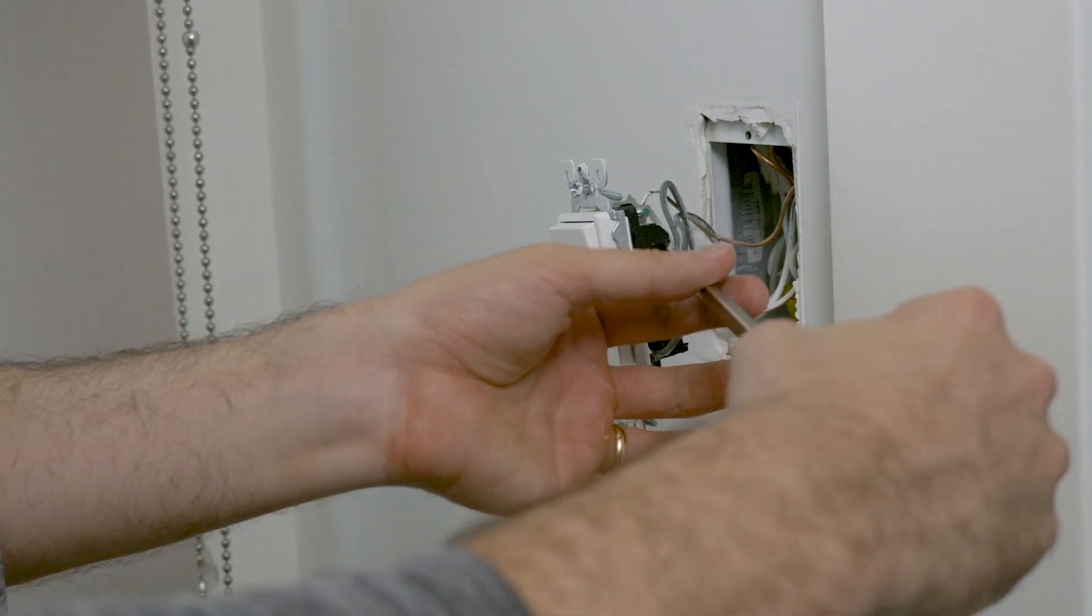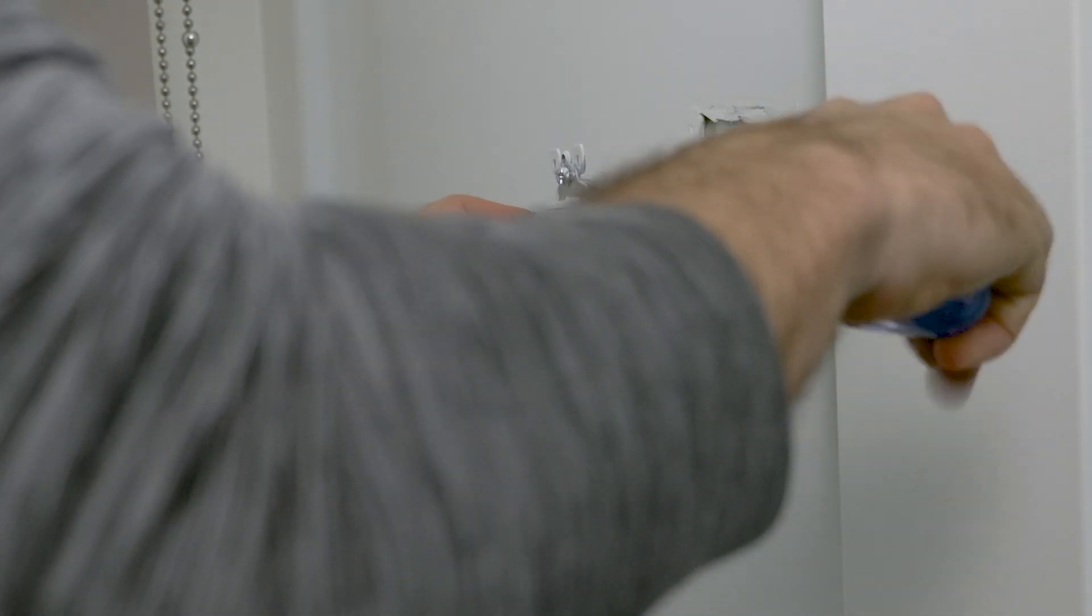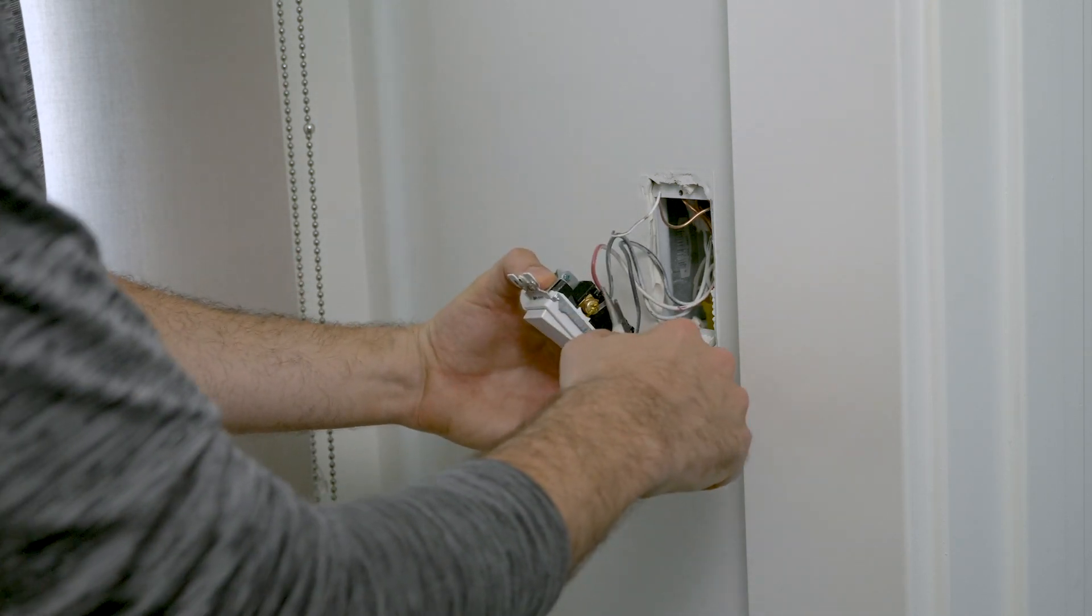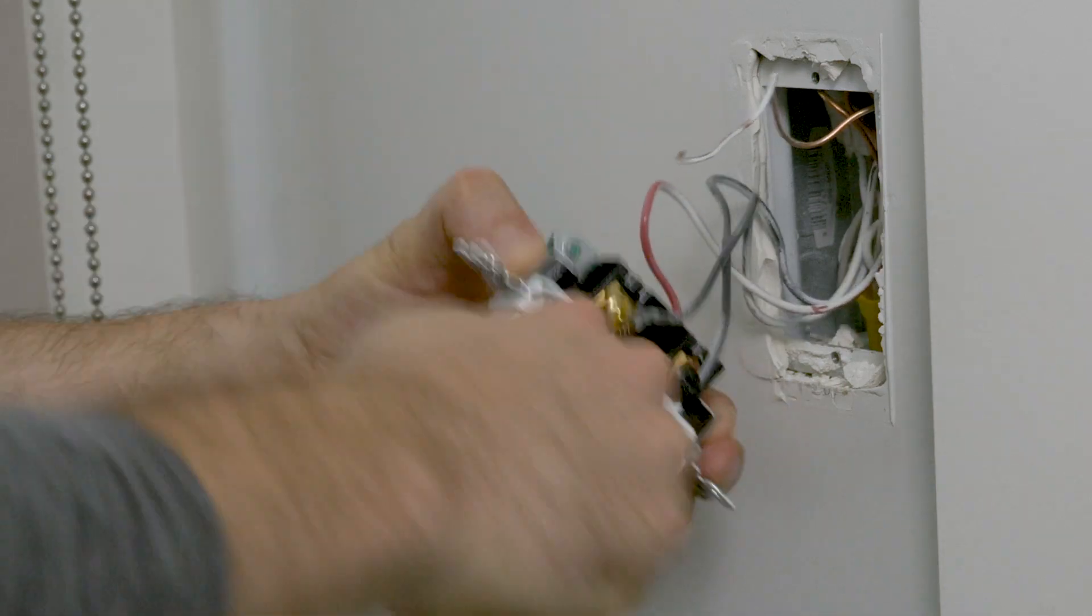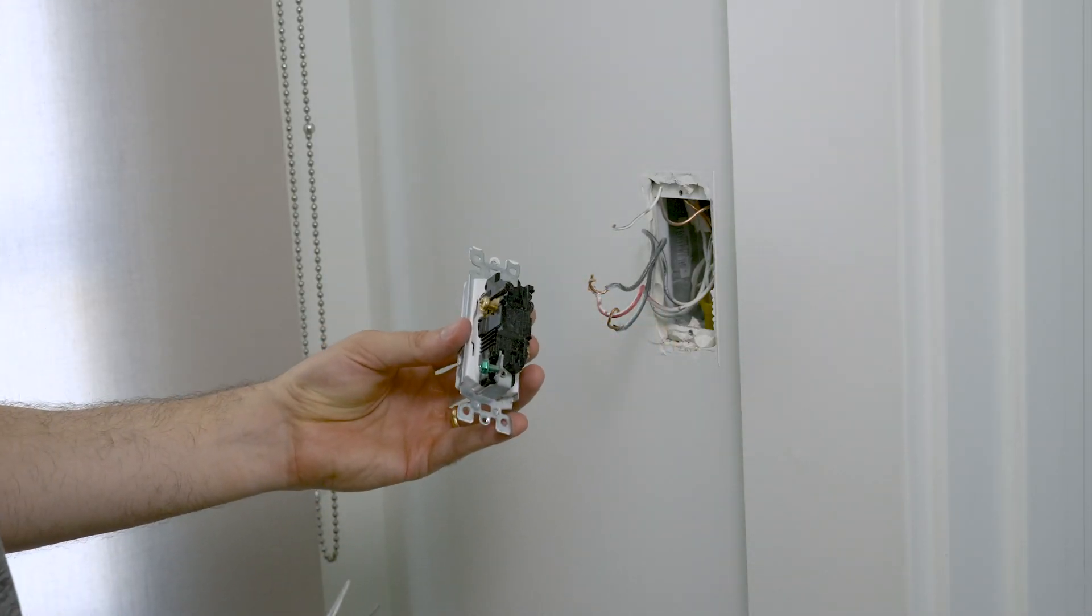Next, I'm going to unscrew the wires. I prefer to leave the ground wire for last. If you run into difficulty prying your wires off the screws, you can use your needle-nose pliers to help. With the switch free of wires, I can now set aside the old switch.